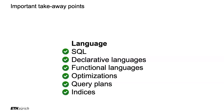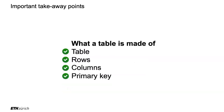I'll go into details in a few weeks on indices — B+ trees and hash indices — and explain all the secrets. The relational model with tables, rows, columns, and primary keys is still there. We still have this at large scales.